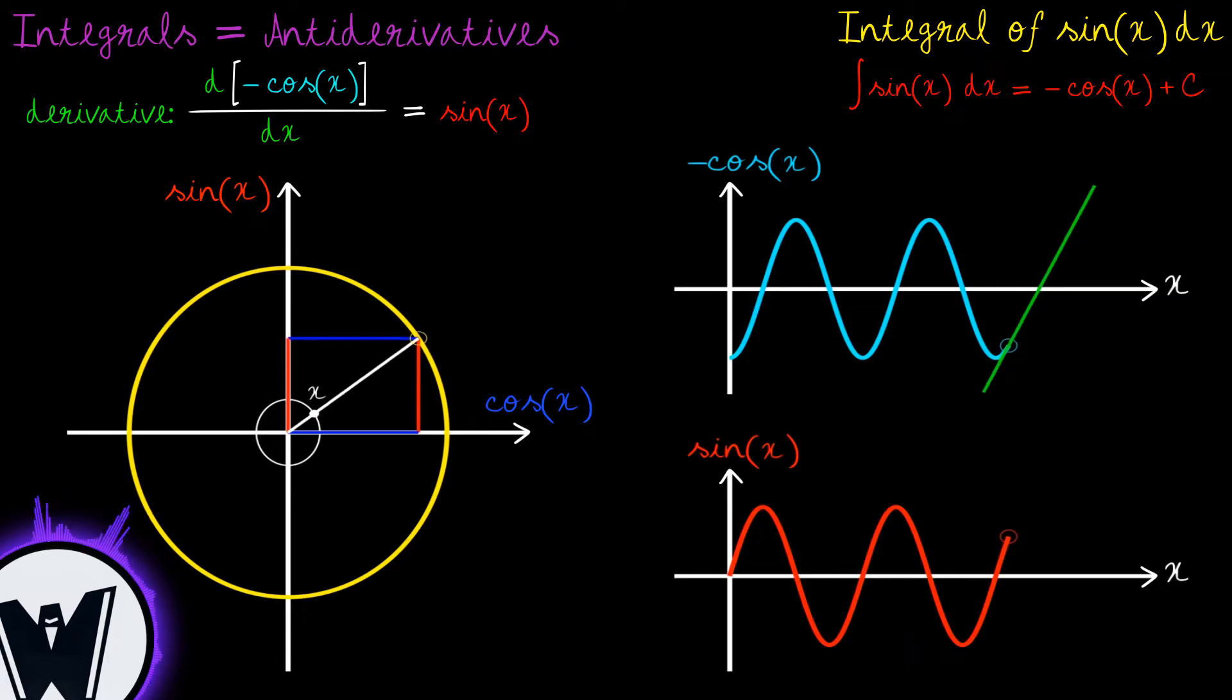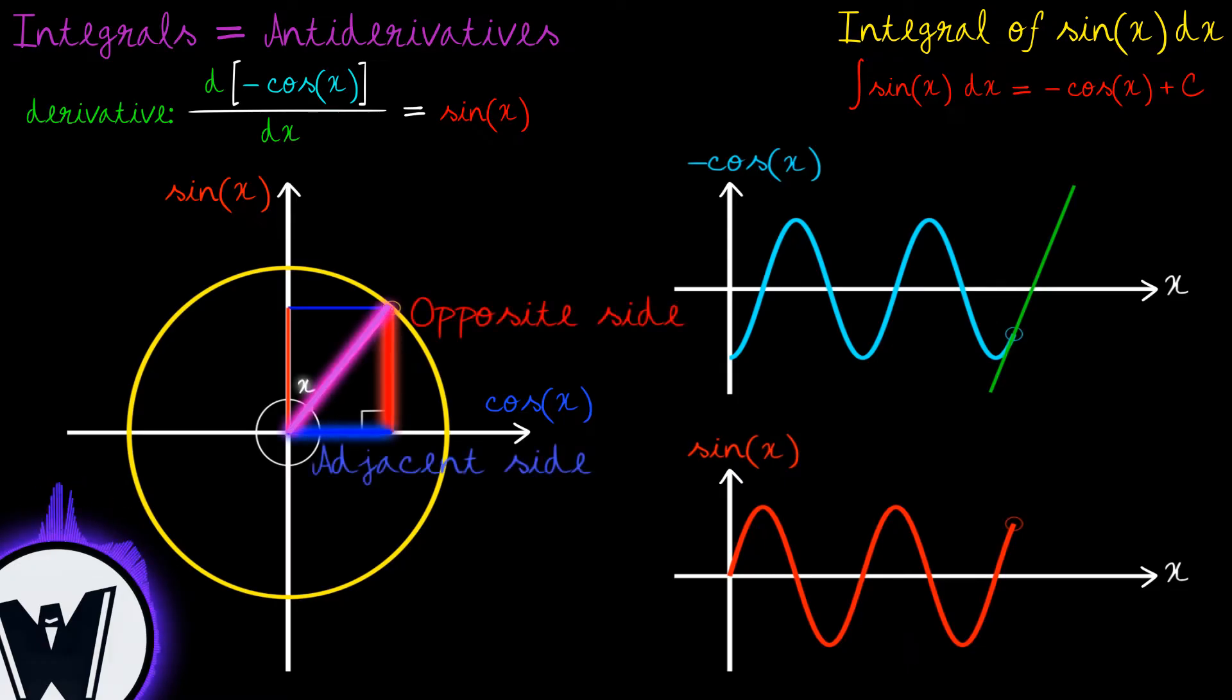Note that x is the angle that the radius of the circle makes with the direction of the positive half of the horizontal axis. The horizontal and vertical axes will be called here respectively cosine and sine axis. This radius is basically the hypotenuse of a right angle triangle with the adjacent and opposite sides to the angle x.